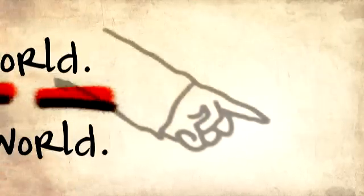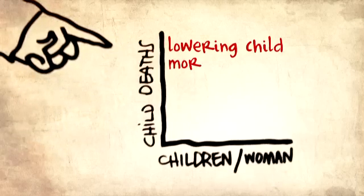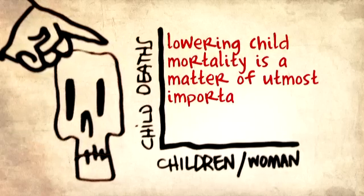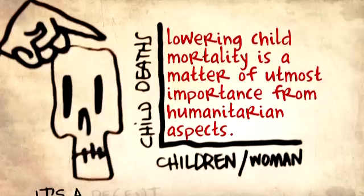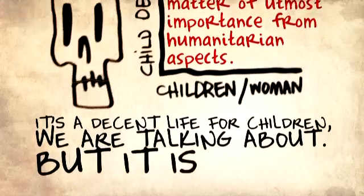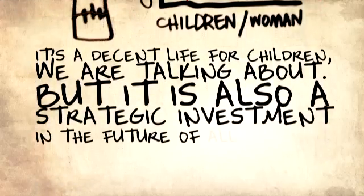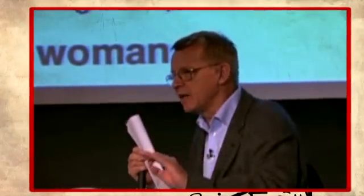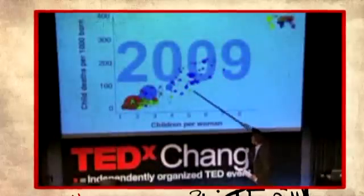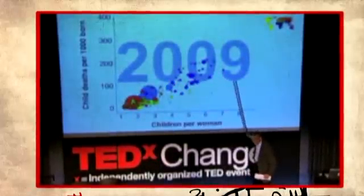Lowering child mortality matters most from a humanitarian perspective — it's about a decent life for children. But it is also a strategic investment in the future of all mankind because it's about the environment. We will not be able to manage the environment and avoid the terrible climate crisis if we don't stabilize the world population. The way to do that is to get child mortality down, get access to family planning, and behind that, a drive for female education. That is fully possible. Let's do it. Thank you very much.